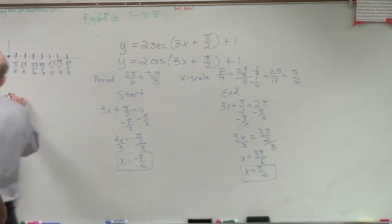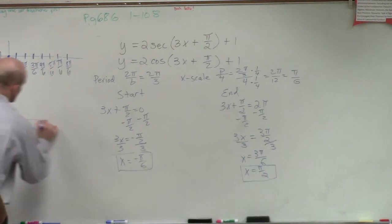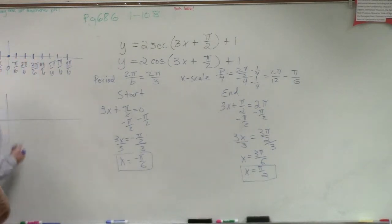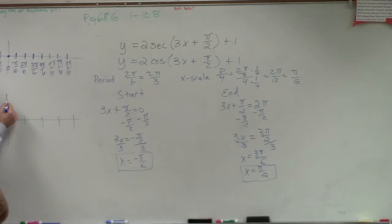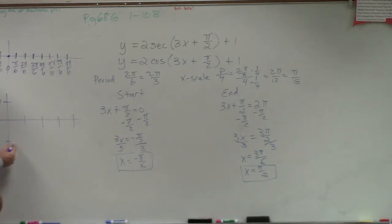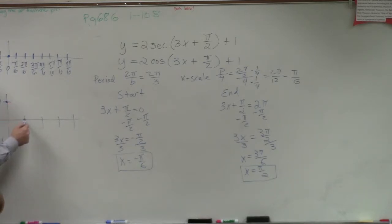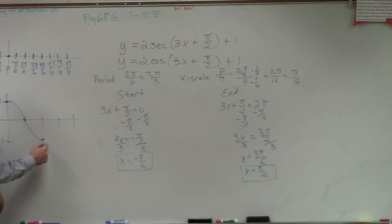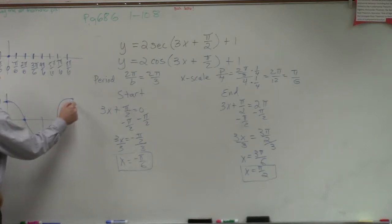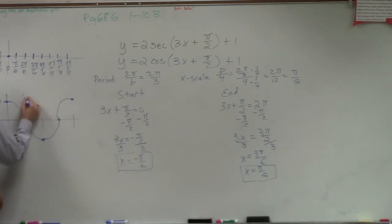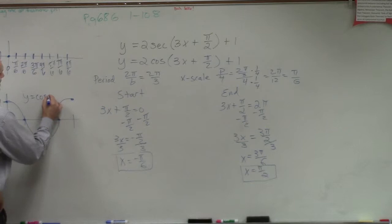Let's go back and remember what the parent graph of cosine looks like. Cosine has four important points. It starts at (0, 1), then goes to the x-intercept, down to the minimum at (0, −1), then back up. That's what y equals cosine of x — the parent function — looks like.